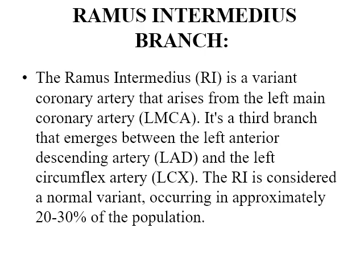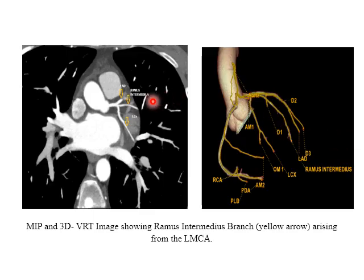The ramus intermedius is a variant coronary artery that arises from the left main coronary artery. It is the third branch that emerges between the left anterior descending artery and the left circumflex artery, and it is considered a normal variant occurring in 20 to 30% of the population. On imaging, we can see the LAD, the left circumflex artery, and the ramus intermedius running between them.